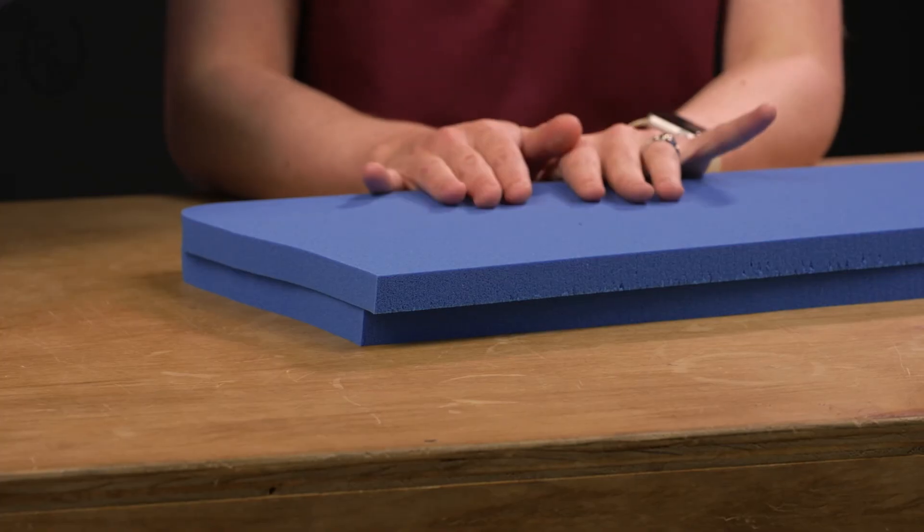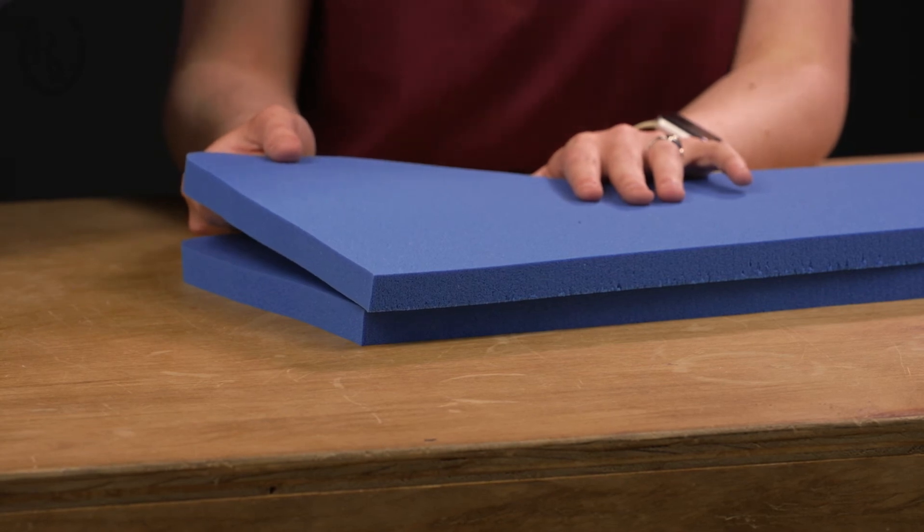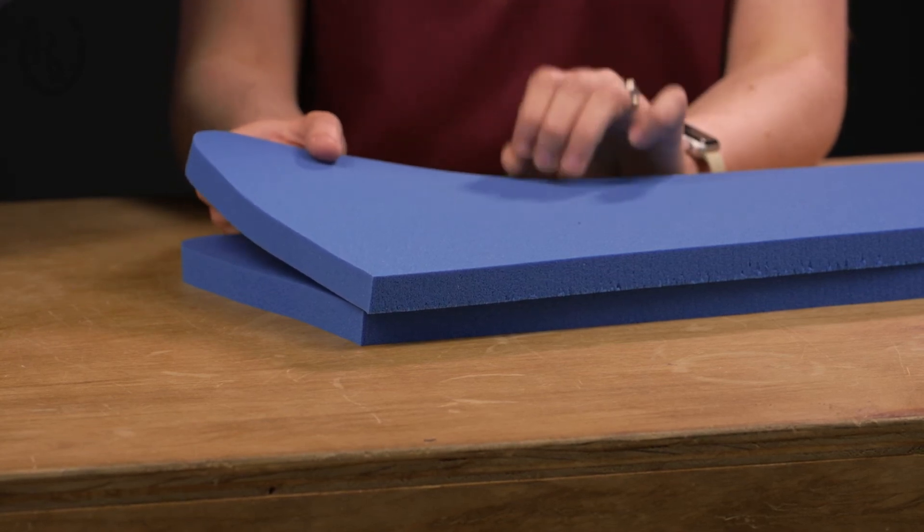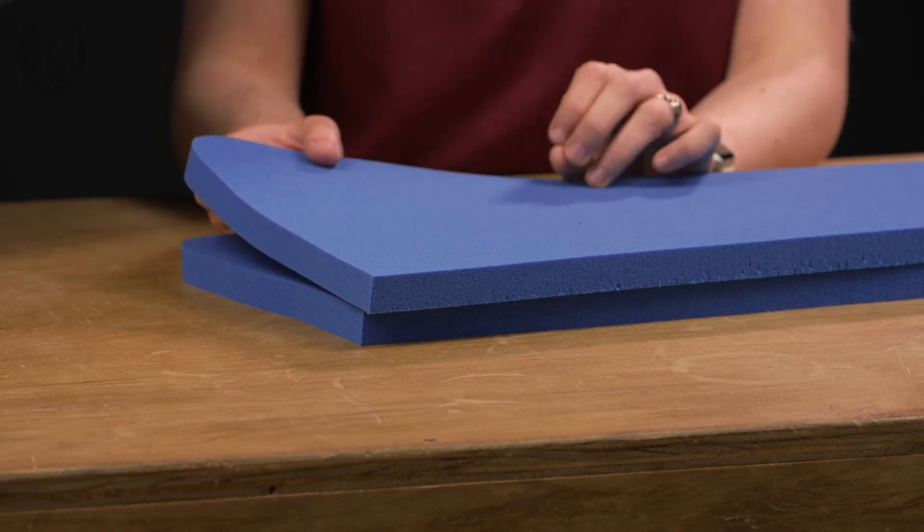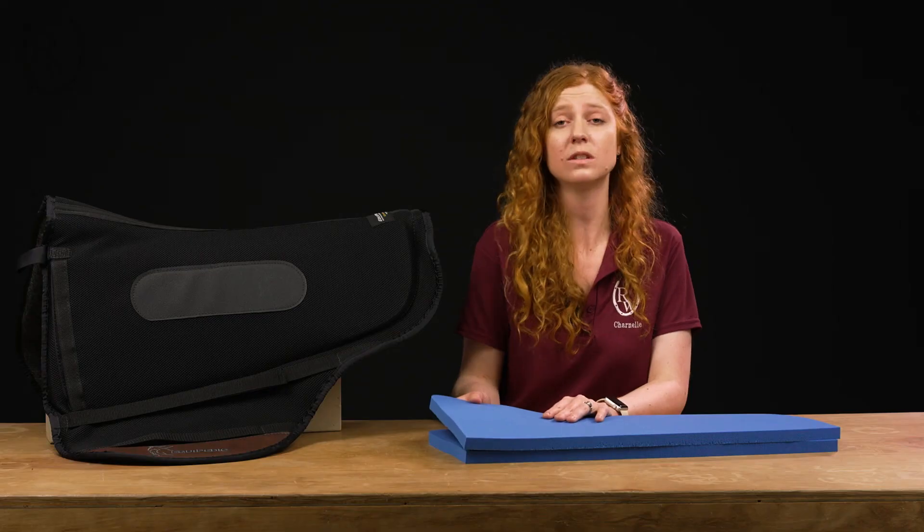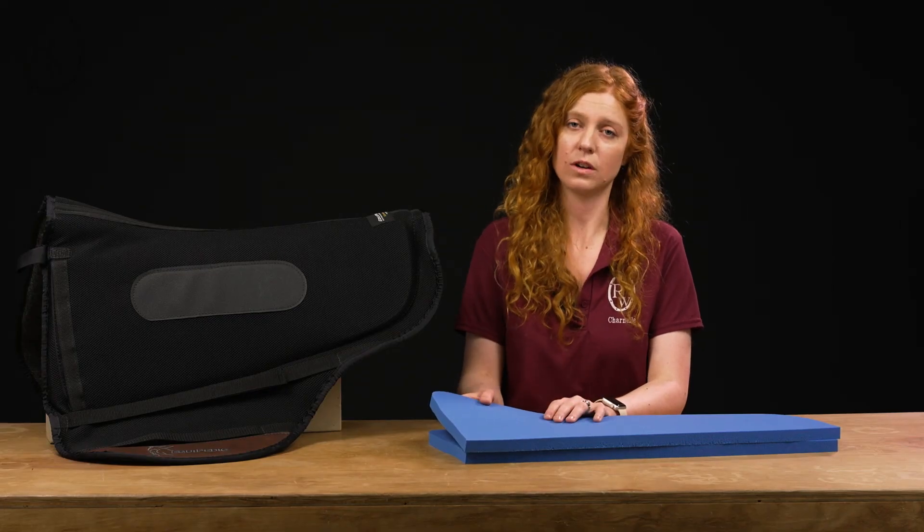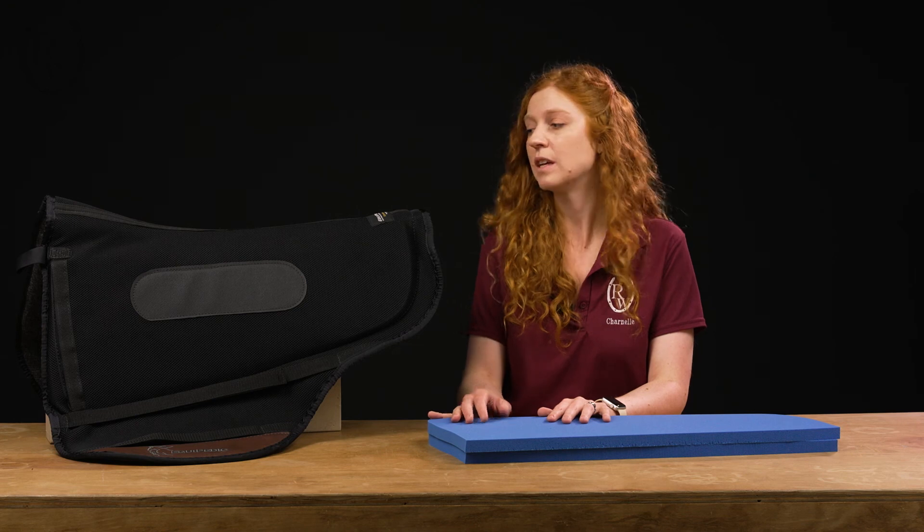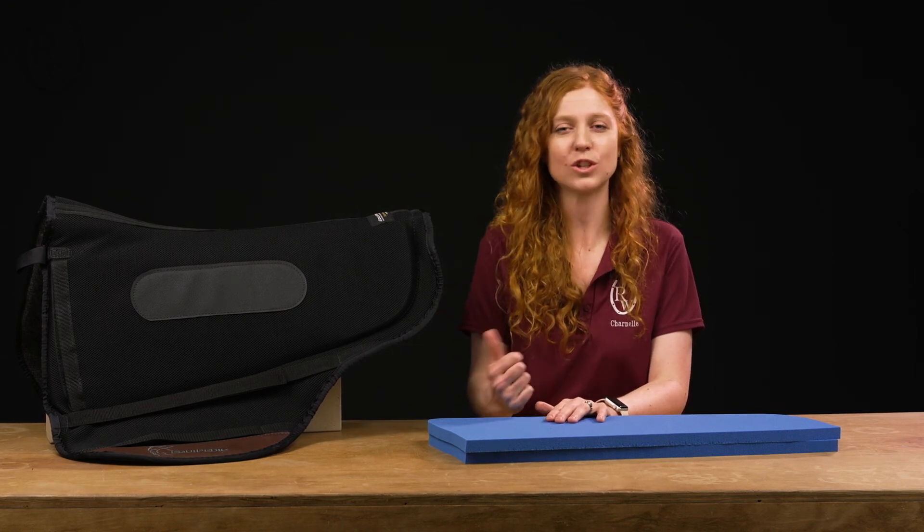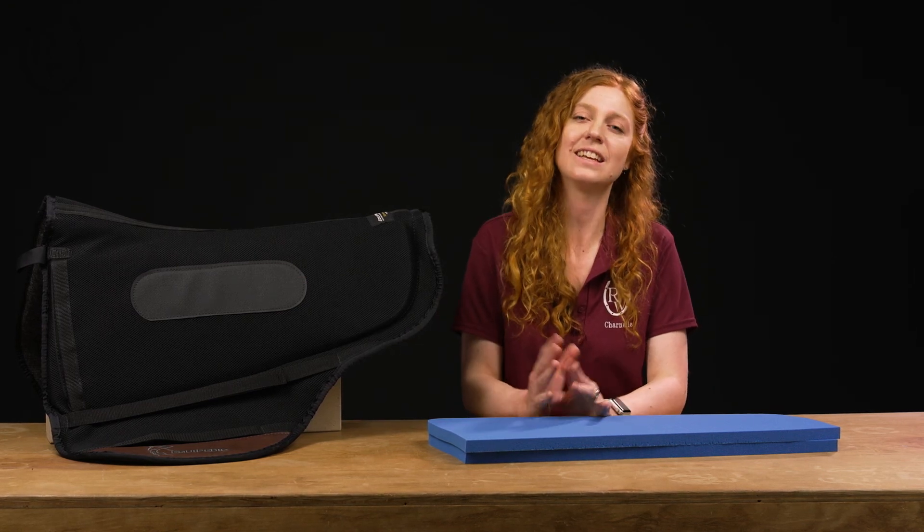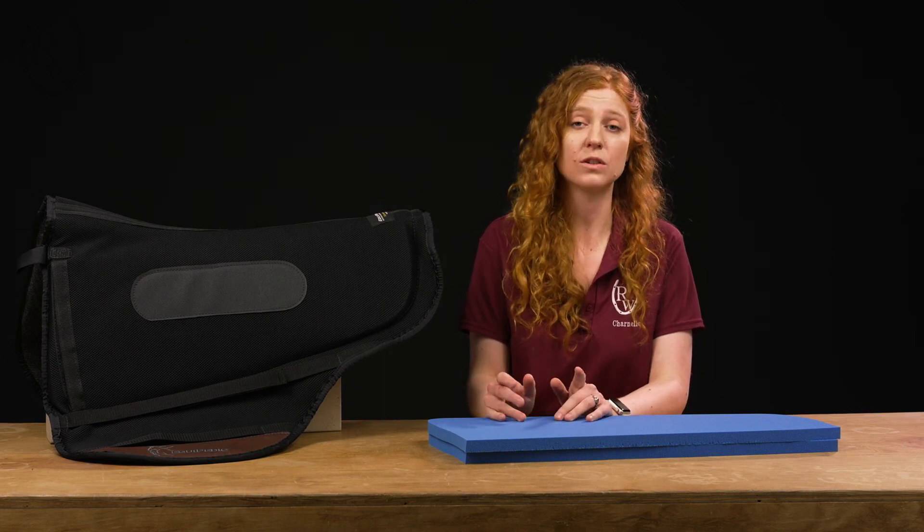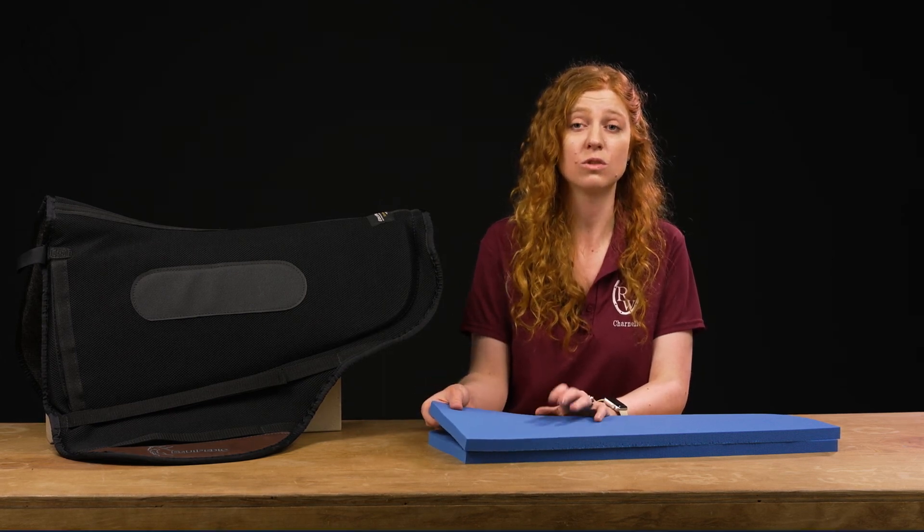Also something to definitely note is that these do adapt to their environment, so if they are stored in a cooler location for longer periods of time, they will stiffen up, but they are still fully functional. All you need to do is just put the saddle pad on your horse, start riding, and basically the heat from your horse transfers and allows these inserts to soften up.